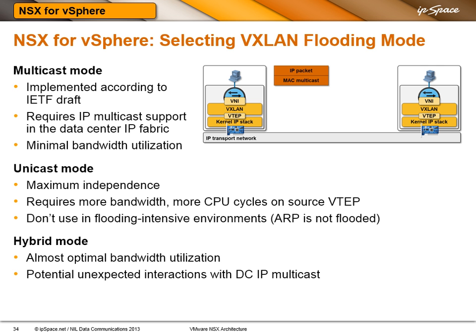Hybrid mode looks like a perfect solution, and it is — if you are absolutely sure that IP multicast is not enabled in the transport network. If you use hybrid mode with IP multicast present in the transport network, you will get problematic replication effects where every hypervisor receives numerous copies of the same packet, replicated first at the NSX level and then again at the physical multicast level.